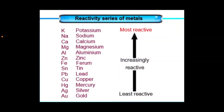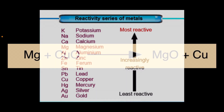This chart shows the reactivity series for metals, and you can see that magnesium is much higher on the chart for reactivity than copper, and that's why magnesium is able to take the oxygen from copper oxide as it reduces the copper oxide to elemental copper.